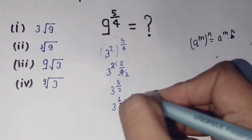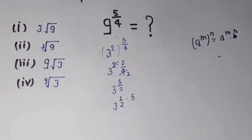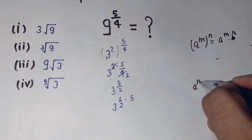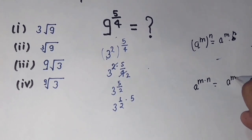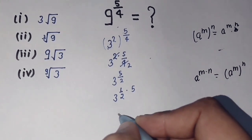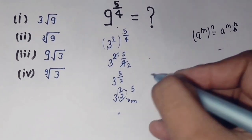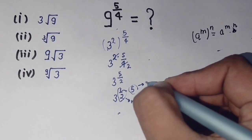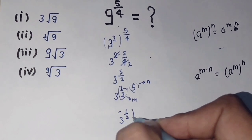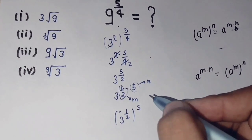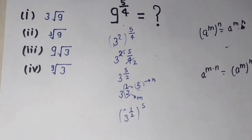This 5 by 2 I can write as 3 to the power 1 by 2 times 5. Again I am using the exponential rule: a raised to power m times n equals a raised to power m, raised to power n. So 3 to the power 1 by 2, raised to power 5 — and 1 over 2 becomes the square root — giving square root of 3 to the power 5.